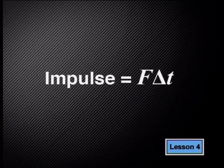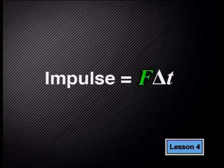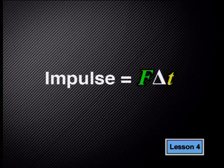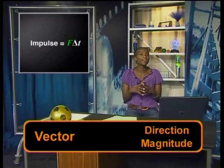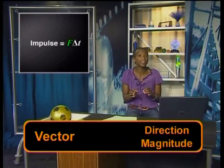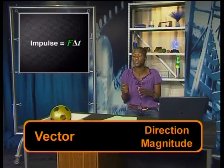Consider the equation again. If the force acting on the gun and the projectile is the same size and it acts for the same period of time, then the impulse experienced by both must be the same. However, impulse is a vector, therefore it has direction as well as magnitude.